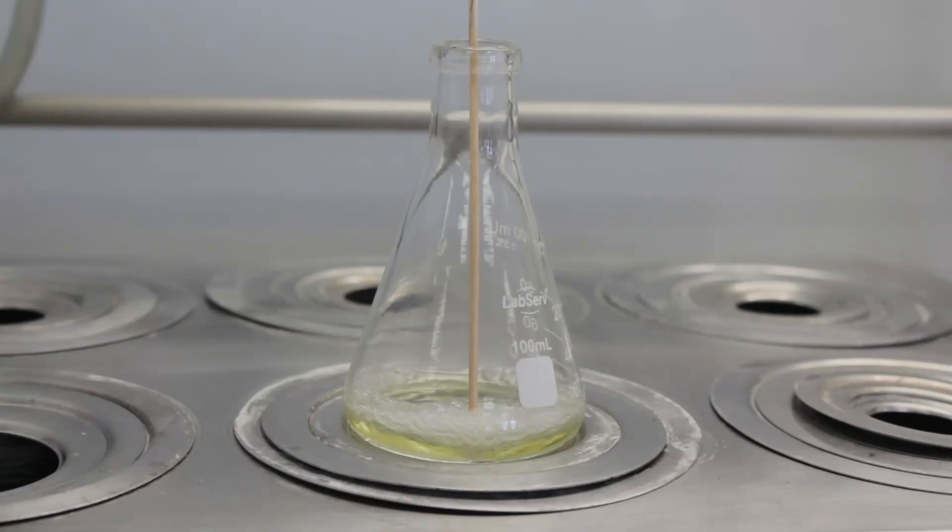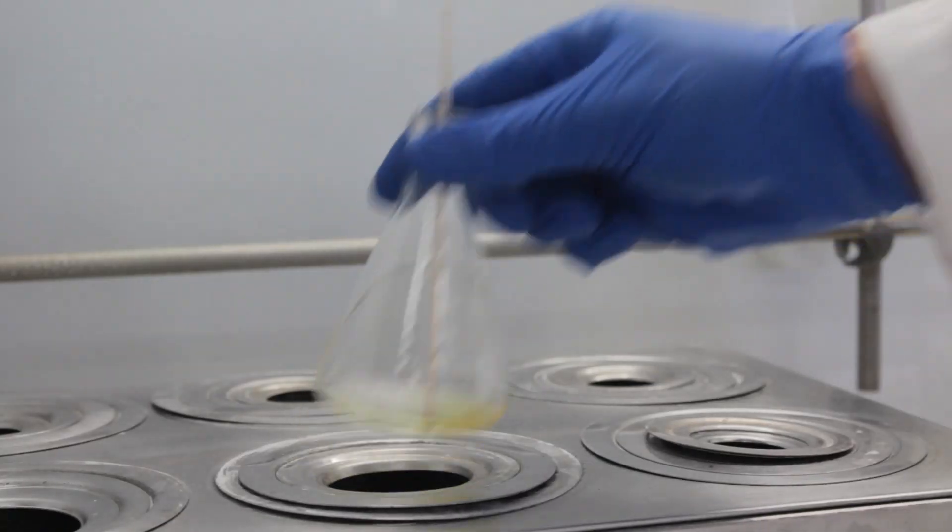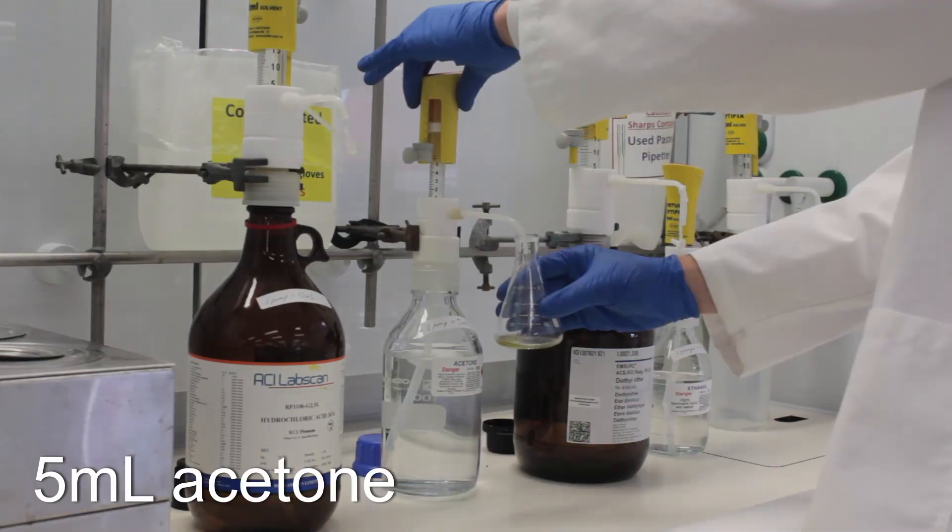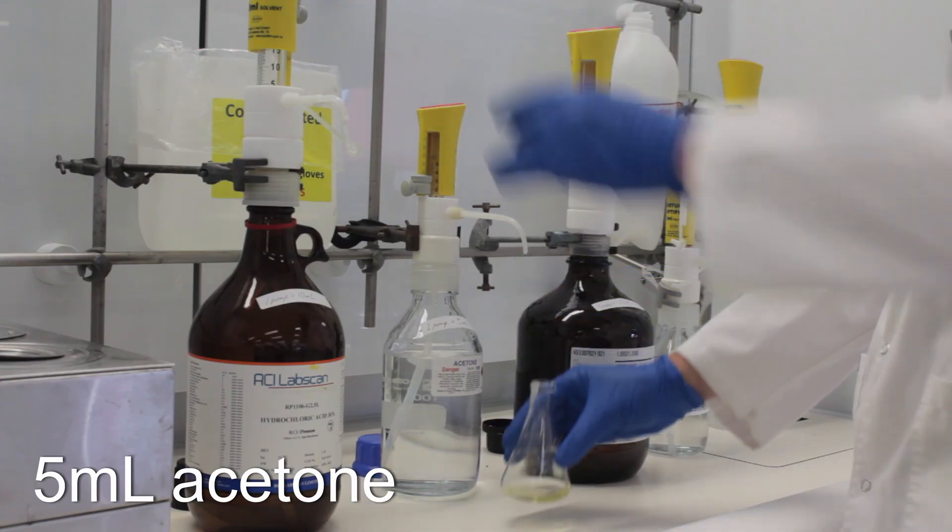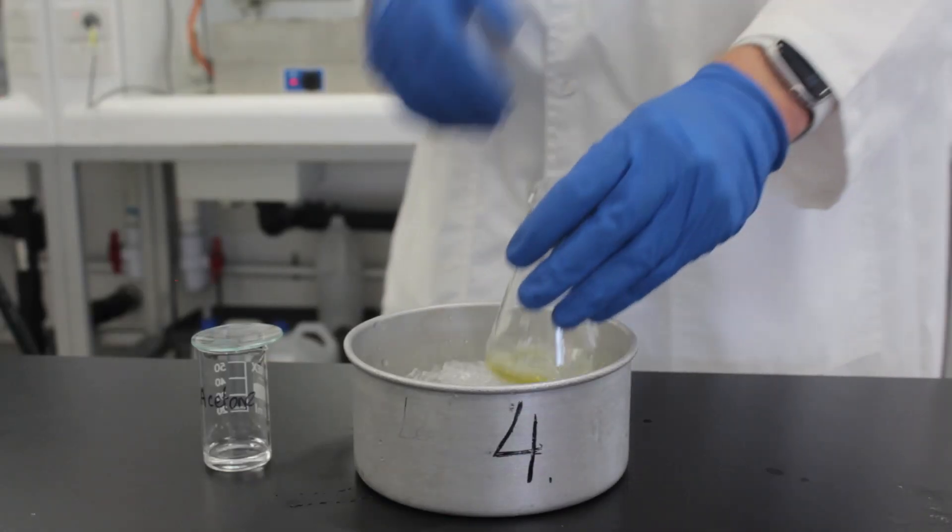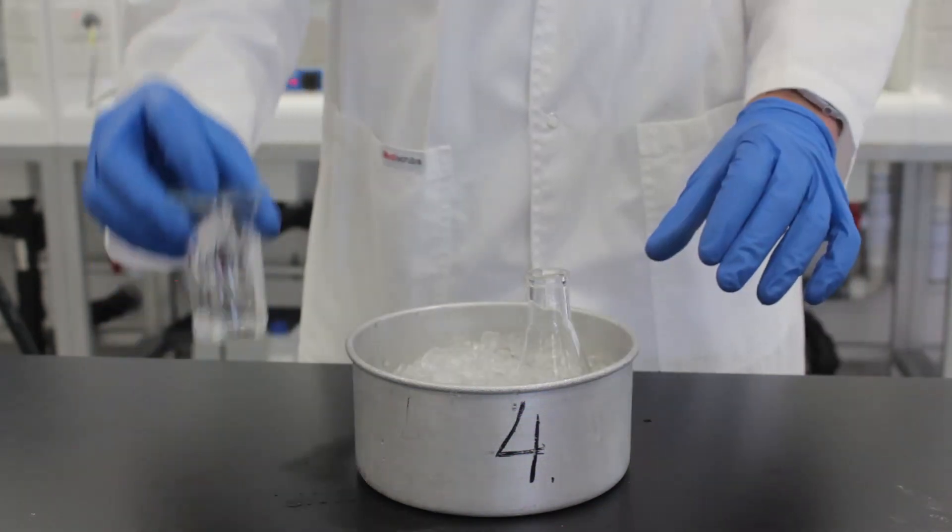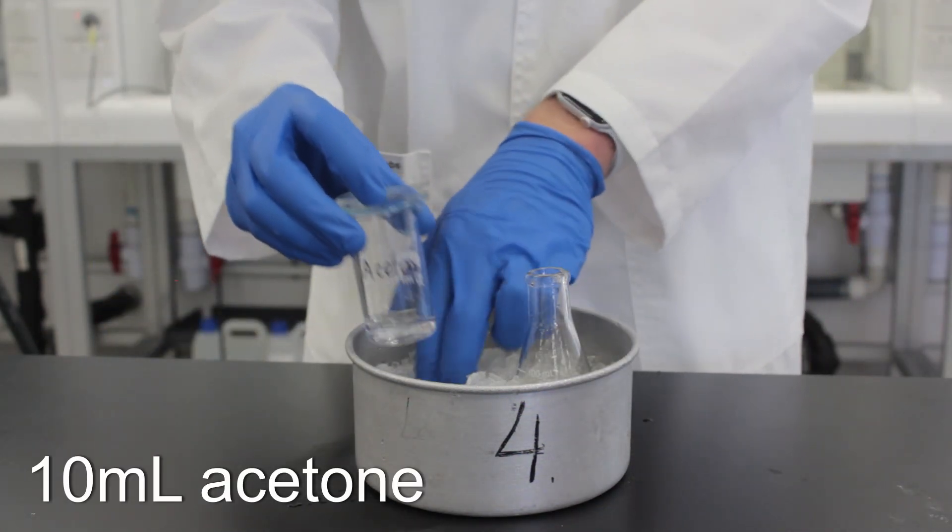When the diethyl ether is done evaporating, discard the boiling stick in the sharps container and add 5 ml of acetone to the warm yellow oil. Take it back to your bench and cool in an ice bath until it recrystallizes. Cool some spare acetone while you're at it.